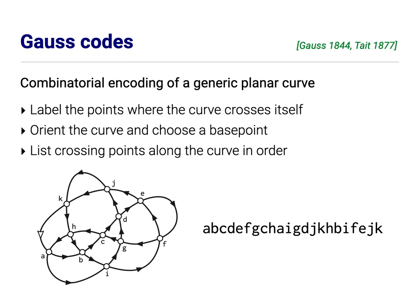This is the Gauss code. Now, clearly the Gauss code depends on the choice of labels, the choice of orientation, and the choice of base point. But equivalent Gauss codes for the same curve, that equivalence is easy to figure out, easy to factor out.